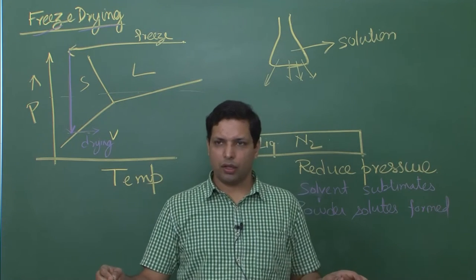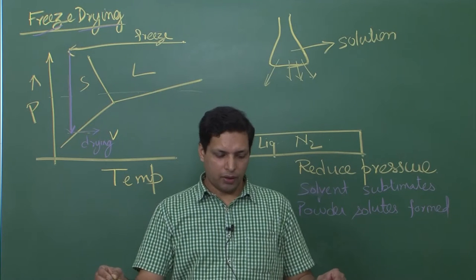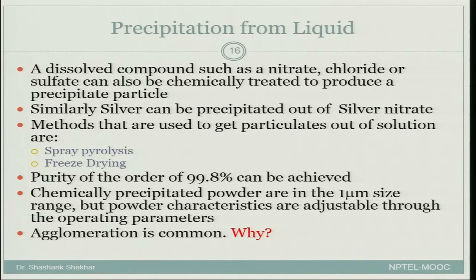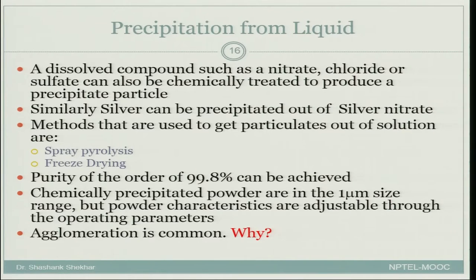These are some of the ways for getting precipitation from the liquid. The purity that you will get using this method is known to be of the order of 99.8 percent — this is decent purity but not very high. Very high purity would be something like 5-nine purity or 6-nine purity, meaning 99.999 percent would be 5-nine purity. Chemically precipitated powders are in the 1-micron size range, but the powder characteristics are adjustable through the operating parameters. You are getting much smaller powder particle size than through other methods.